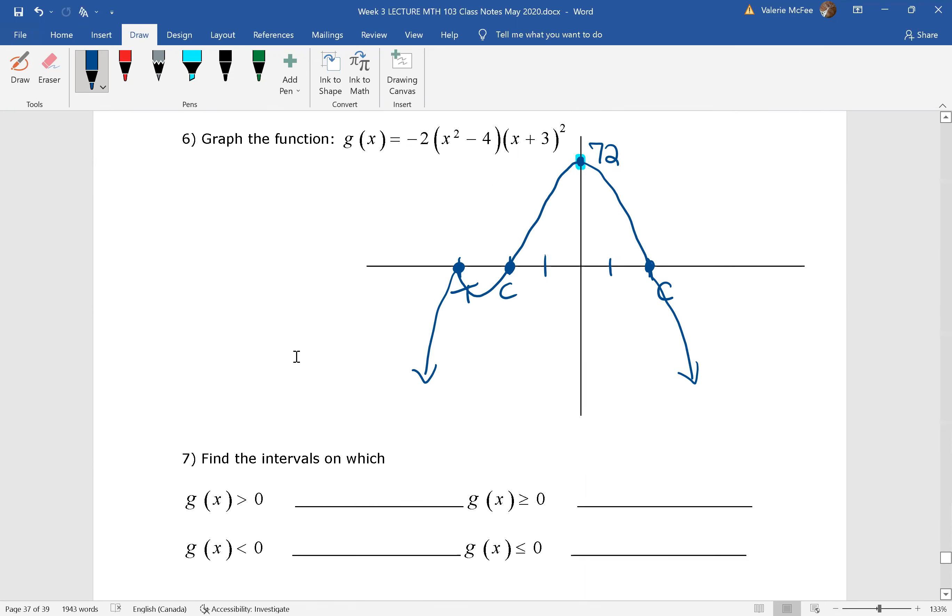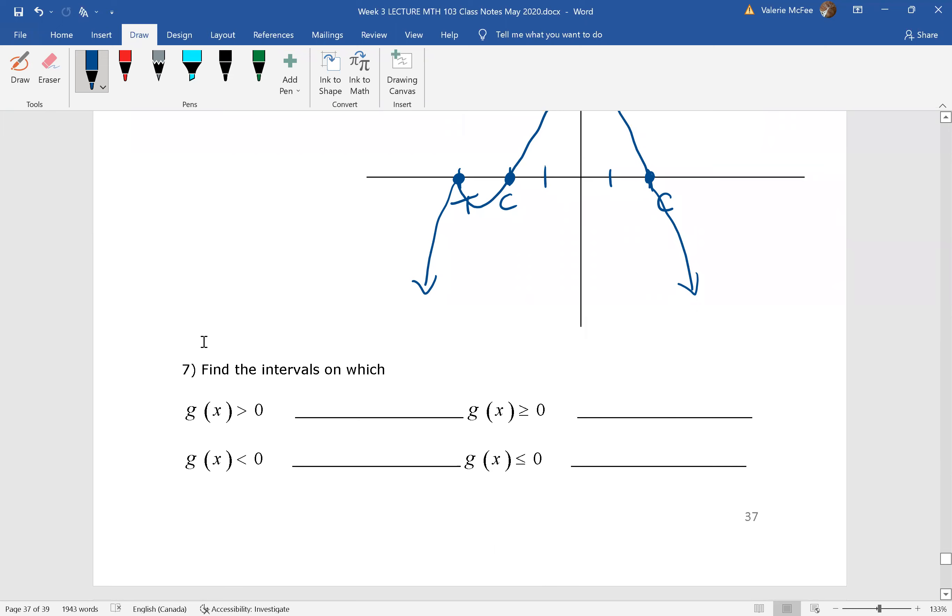And then finally, these questions. Notice that here, for the greater than or equal, we have just x equals negative 3, that one point where it is equal. And then the other interval is just from negative 2 to positive 2. And when we're saying less than or equal, we didn't have to stop for negative 3, because at negative 3 it was equal to 0.